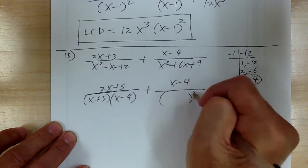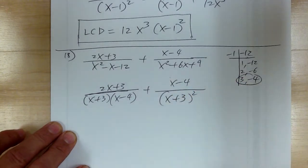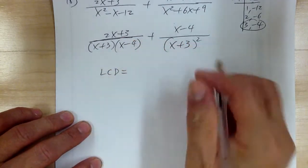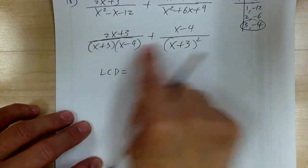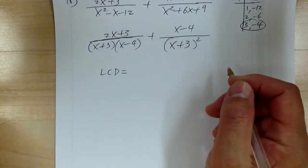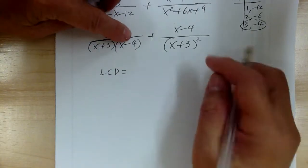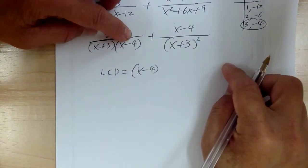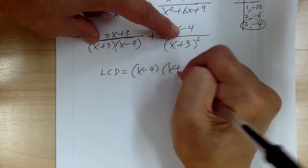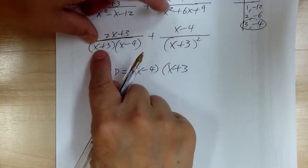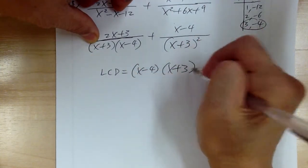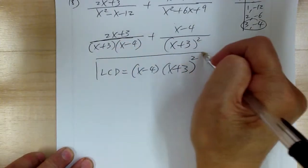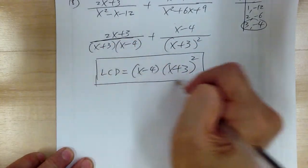For x squared plus 6x plus 9, that's a perfect square, so it factors to x plus 3, squared. Now do your LCD: no number, no alphabet, just the groups. You've got x minus 4 — take that. Then x plus 3: this one is to the 1 power and x plus 3 squared is to the 2 power, so take the 2 power. And that's it for number 18.